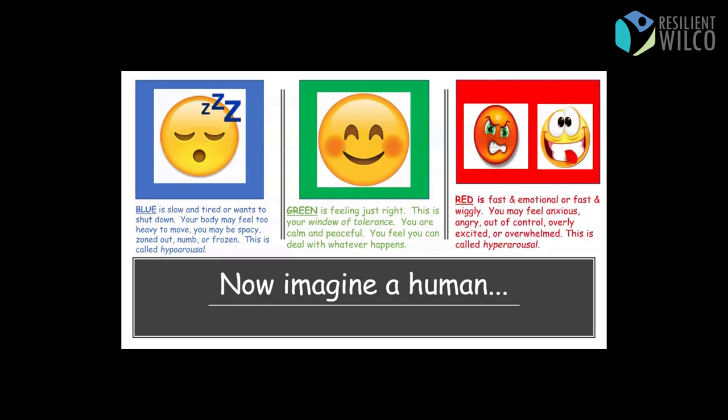And red. Red is pedal to the metal, so fast and emotional or fast and wiggly. You may feel anxious, angry, out of control, overly excited, or overwhelmed. This is called hyper arousal. So jittery, buzzy, moving a lot, really angry. All of that stuff kind of falls into the red. Does that make sense?